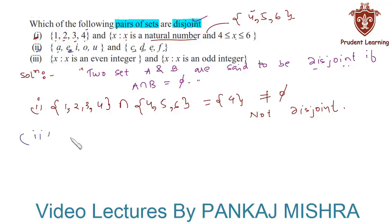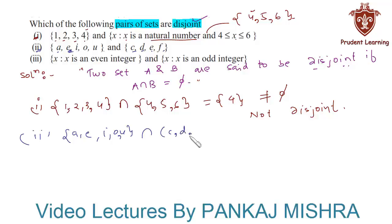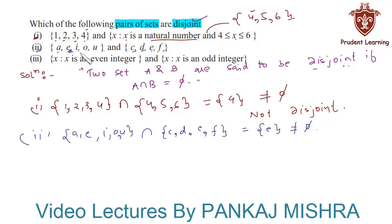The intersection of the set containing vowels and the set containing elements C, D, E, and F is equal to the set containing element E, which is not a null set. Hence the given pair of sets is not disjoint.